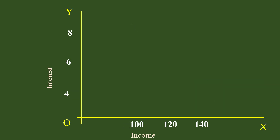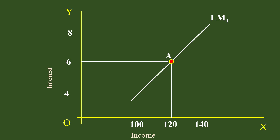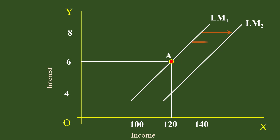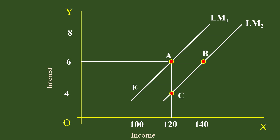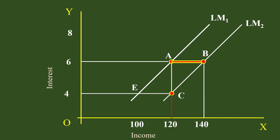Next, take the LM curve. The initial position of the LM curve is LM1. Point A on it represents Rs.120 income and 6% interest. LM1 shifts to the right due to an increase in money supply. LM2 is the new LM curve, showing an increase in income at each interest rate. It passes through points B and C. B represents Rs.140 income and the same interest 6%. C represents the same income Rs.120 and less interest 4%. Points B and C are away from A and E, confirming that income increases at each level of interest.